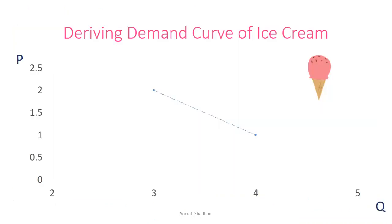Finally, we can plot the two points and create a demand curve for ice cream. As we saw, at the price of $2 the quantity demanded was 3, and at the price of $1 the quantity demanded was 4. Here we can recall that the demand curve represents the marginal benefit or the willingness to pay for a certain consumer. You can think about utility and the budget constraint that we saw in a previous video, and in future videos we will see the link. Thank you for watching — if you liked the video, please give it a thumbs up and stay tuned for future videos.